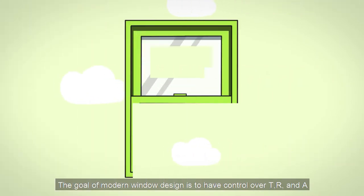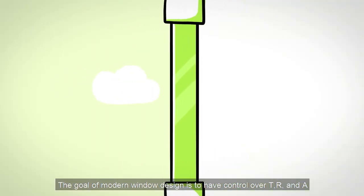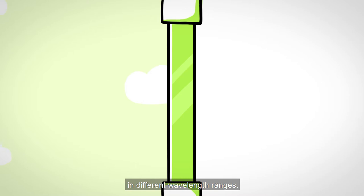The goal of modern window design is to have control over T, R, and A in different wavelength ranges.